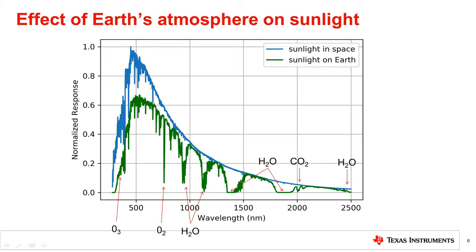Shown in blue is the same sunlight spectrum in outer space from the previous slide, but now zoomed out to show a larger range of wavelengths. Shown in green is the light that makes it to sea level. Sunlight is absorbed at certain wavelengths by different molecules in the atmosphere, such as water, carbon dioxide, oxygen, and ozone, as shown.